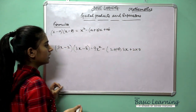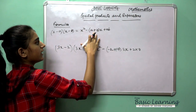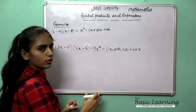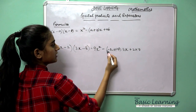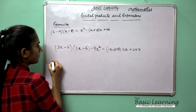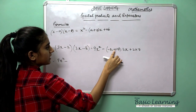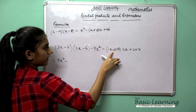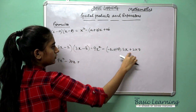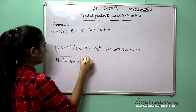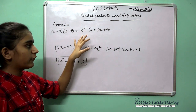Now, since both terms are minus, minus times minus gives plus, so we add: 2 plus 8 gives 10, and 10 times 3x gives 30x. Then a times b is 2 times 8 equals 16. So the final answer is 9x square plus 30x plus 16. This completes the fourth formula and all formulas for the first part.